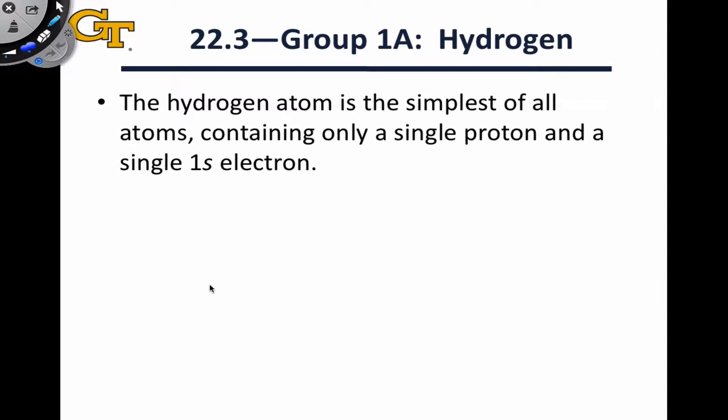Hydrogen is the simplest of all atoms, and so it makes sense to begin our survey of the main group elements with the hydrogen atom. Hydrogen contains only a single proton and a single electron, which makes it the smallest atom in addition to being the simplest.